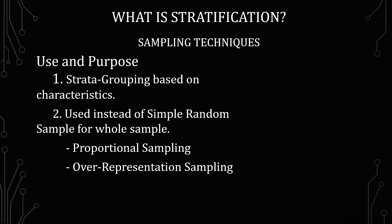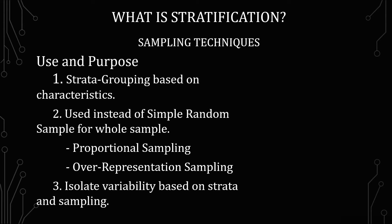The purpose of stratification is to isolate variability based on strata and sampling. You're designating groups of people or objects into these strata to see what their natural variances are. On top of that, you're applying a number to how many observations you're seeing. As we understand from the variance calculation, the number of observations you see is going to affect that calculation.